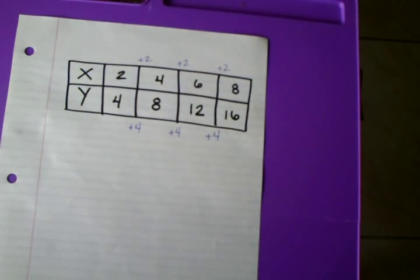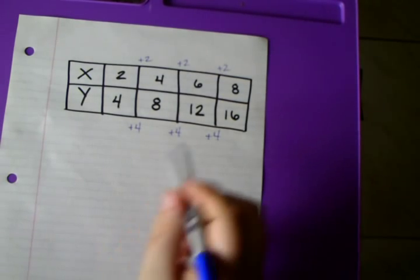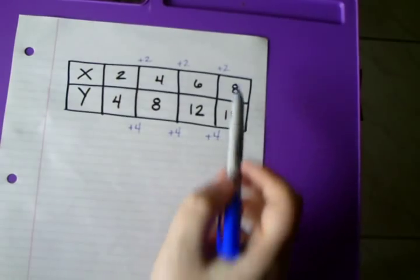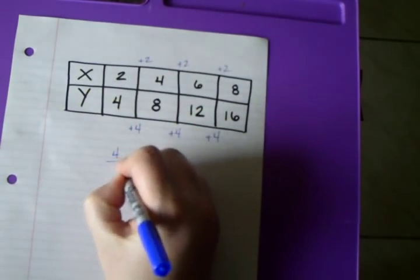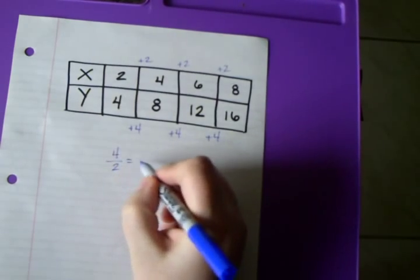Now, what I'm going to do is take the changes and write them as a fraction. Remember that we always put the change in y on top of the change in x. So 4 over 2. So first time, 4 over 2. 2 goes into 4 twice.